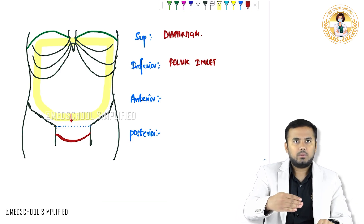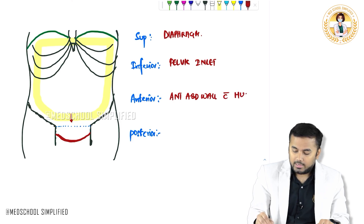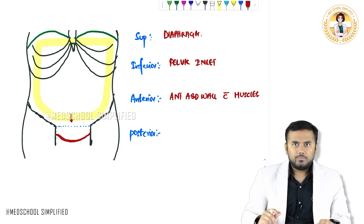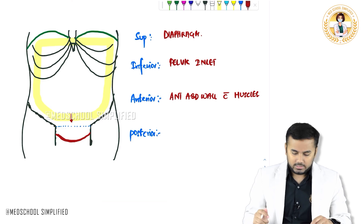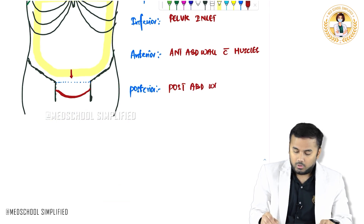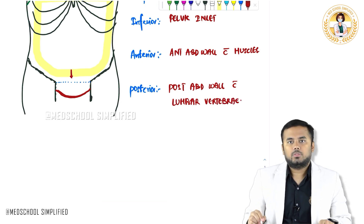Anteriorly, what do you have? You have got abdominal muscles. So anteriorly you have got the anterior abdominal wall along with the anterior abdominal muscles. And exactly on the back, what do you have? You have got the vertebra and the posterior abdominal muscles. So on the back, you have got the posterior abdominal wall with the lumbar vertebra.